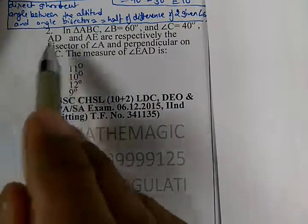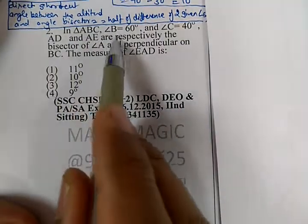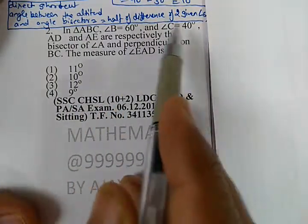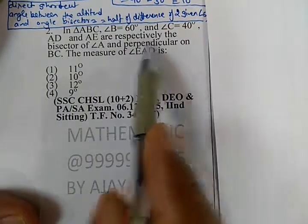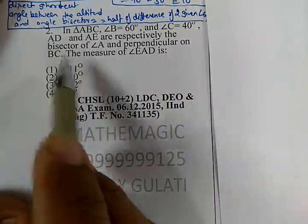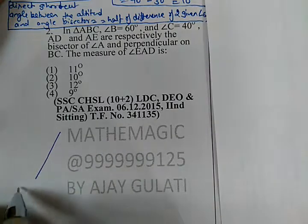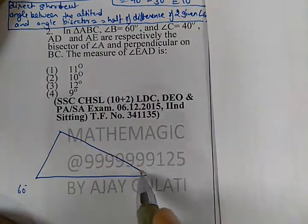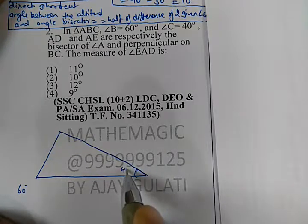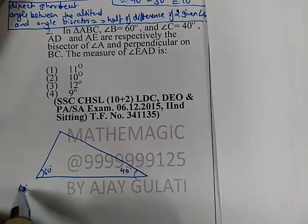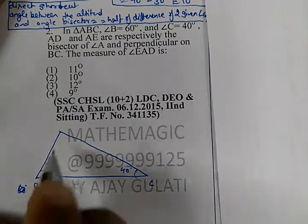In triangle ABC, angle B is equal to 60 degrees and angle C is equal to 40 degrees. AD and AE are respectively the bisector of angle A and the perpendicular on BC. This is the angle 60 degrees, this is the angle 40 degrees, and this is the vertex B and this is the vertex C.